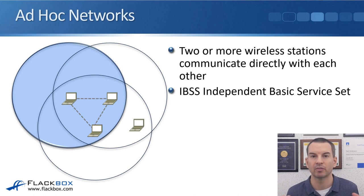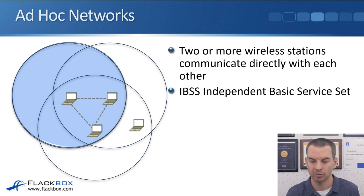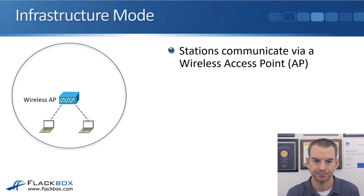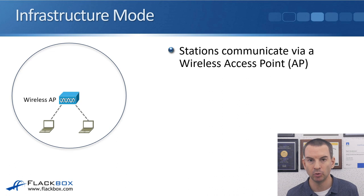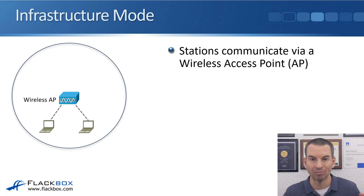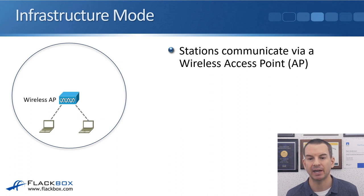This scalability issue means ad hoc networks only really work for a WPAN — a wireless personal area network — where all devices are very close to each other. This is where infrastructure mode comes in, which can solve that scalability issue. In infrastructure mode, rather than communicating directly with each other, devices communicate via a wireless access point.